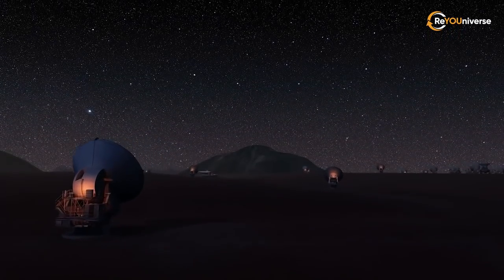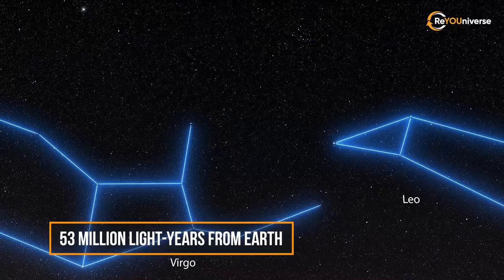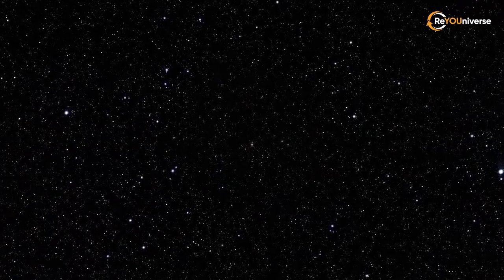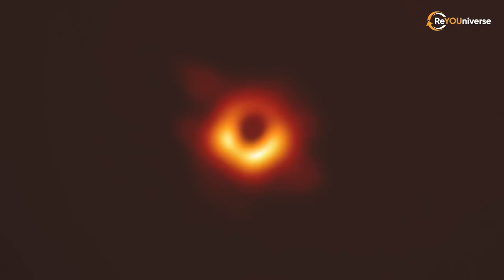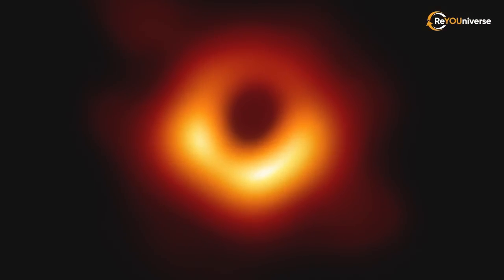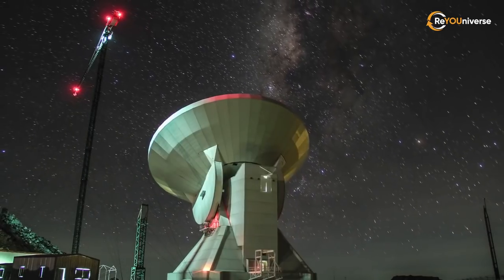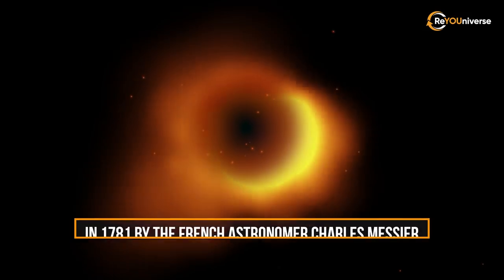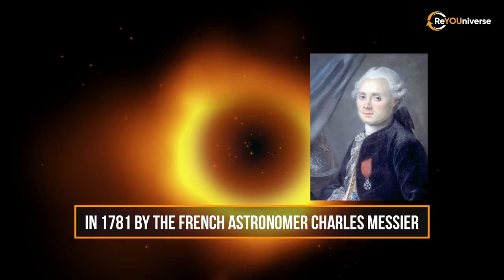The galaxy is located approximately 53 million light-years from Earth. Although it is insanely far away, it is virtually a stone's throw from us when compared to the distance of MACS-2129-1. The relative proximity and gigantic size of the galaxy contributed to its early discovery in 1781 by the French astronomer Charles Messier.